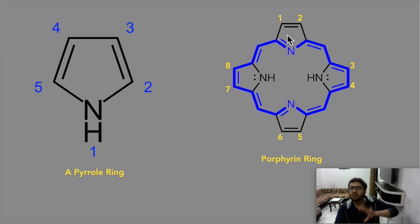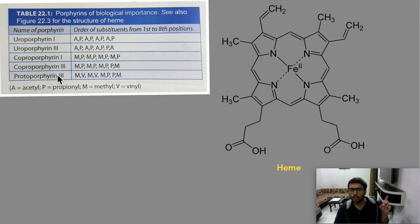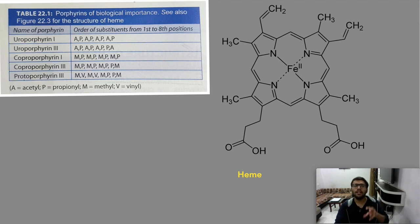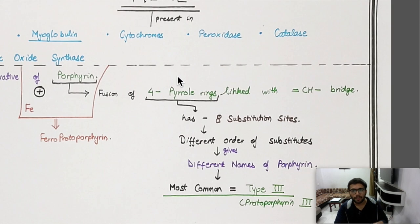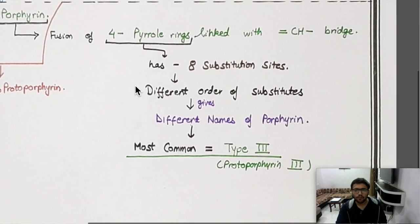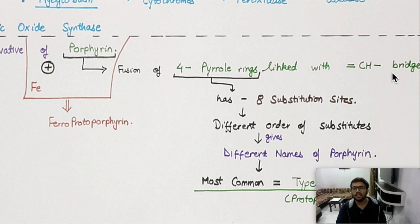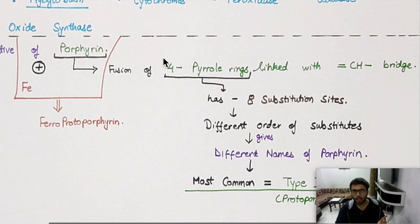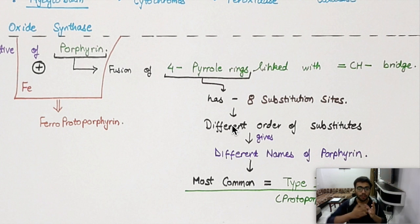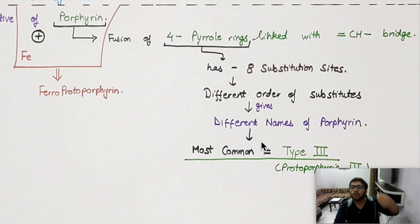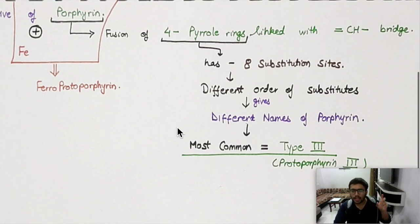Just understand — don't focus on memorizing every substitution. You have substituted groups here and formed protoporphyrin. Now when protoporphyrin combines with iron (Fe), it forms heme. Different orders of substitution give different types of porphyrin. The most important one in our body is protoporphyrin type 3.